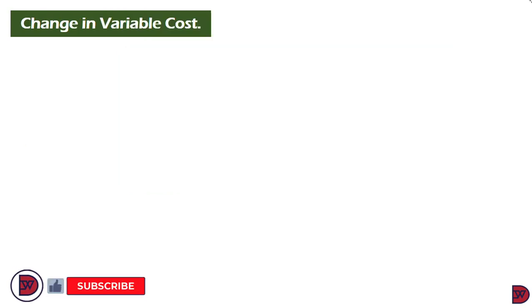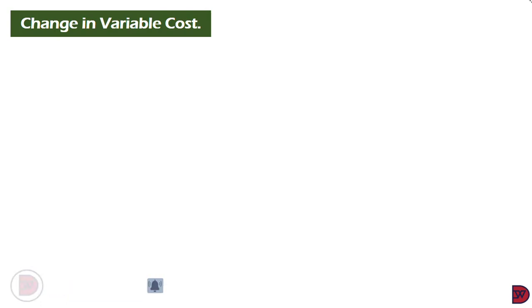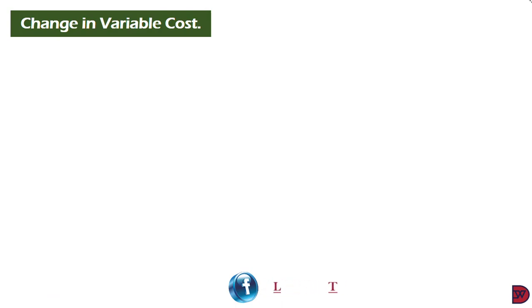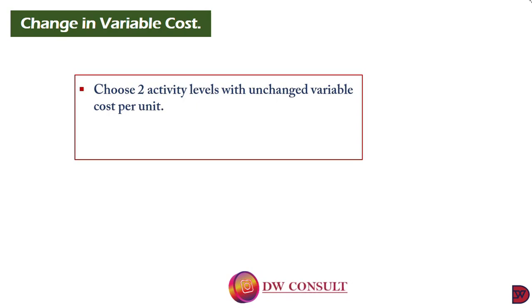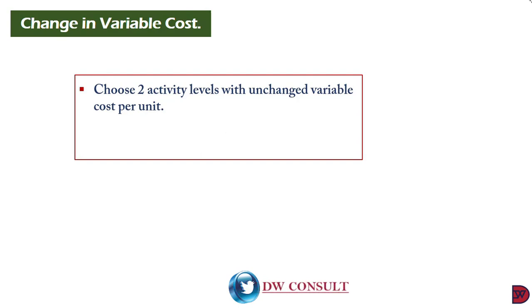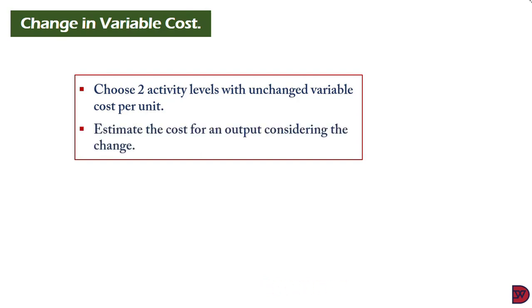We now look at changes in variable cost. In this situation, the variable cost per unit changes — for example, due to a discount. What we do is pick two activity levels within the unchanged variable cost per unit range, then estimate the cost for an output that falls within the changed cost range.